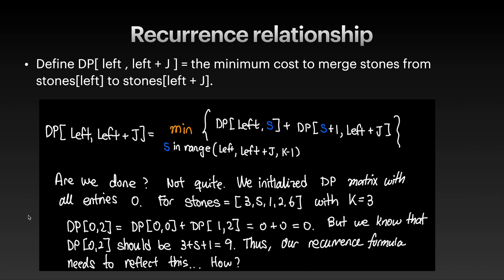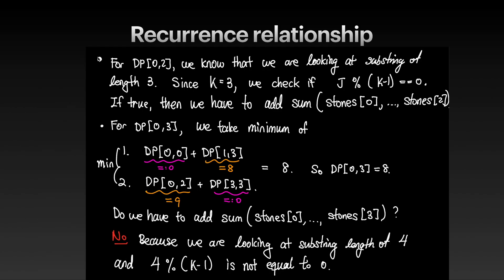For dp[0][2] we are looking at a substring of length three. Since k equals three, we check if j modulo (k minus one) equals zero. If it is, we add the sum of all stones in that range — stones[0] plus stones[1] plus stones[2] — to the DP value. This handles the cost of the final merge.